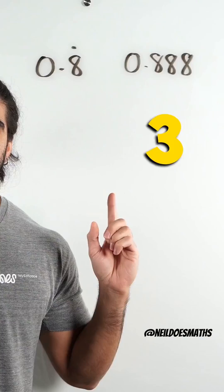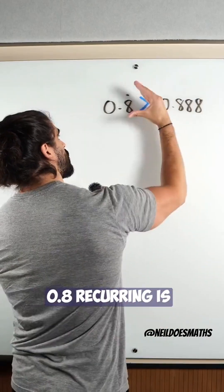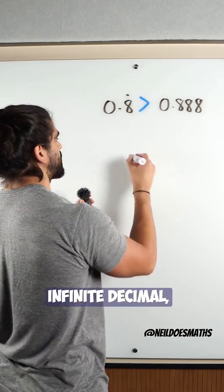Next question. Question two. 0.8 recurring is larger than 0.888. Recurring is an infinite decimal.